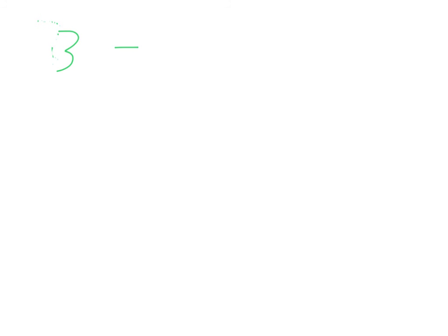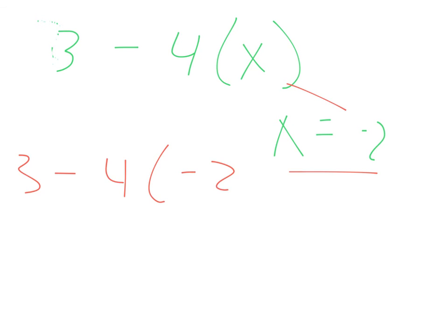For a different practice problem, if you had 3 minus 4x and x was negative 2, you would substitute: 3 minus 4 times negative 2. Negative 4 times negative 2 is positive 8, so 3 plus 8 gives you 11.